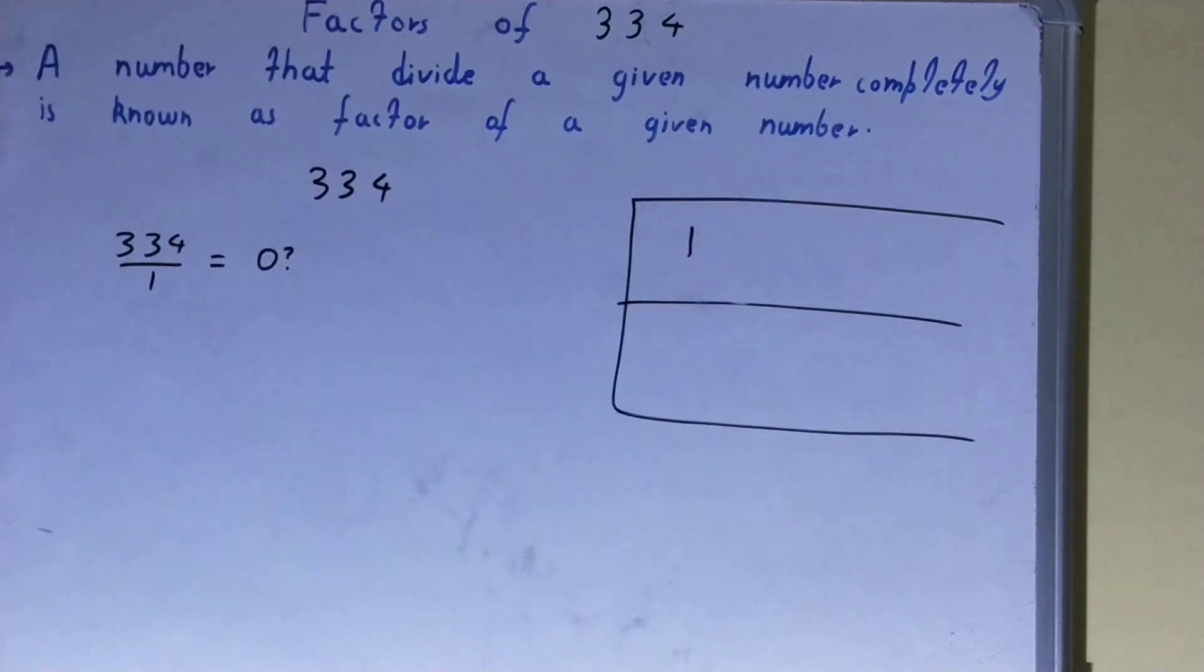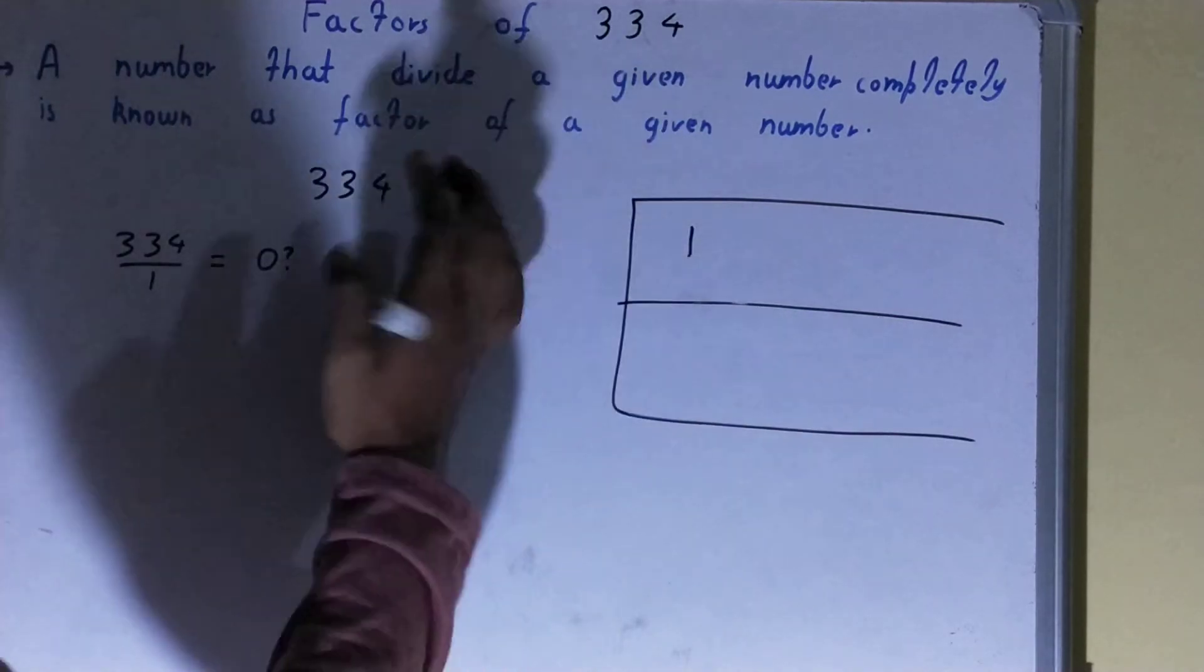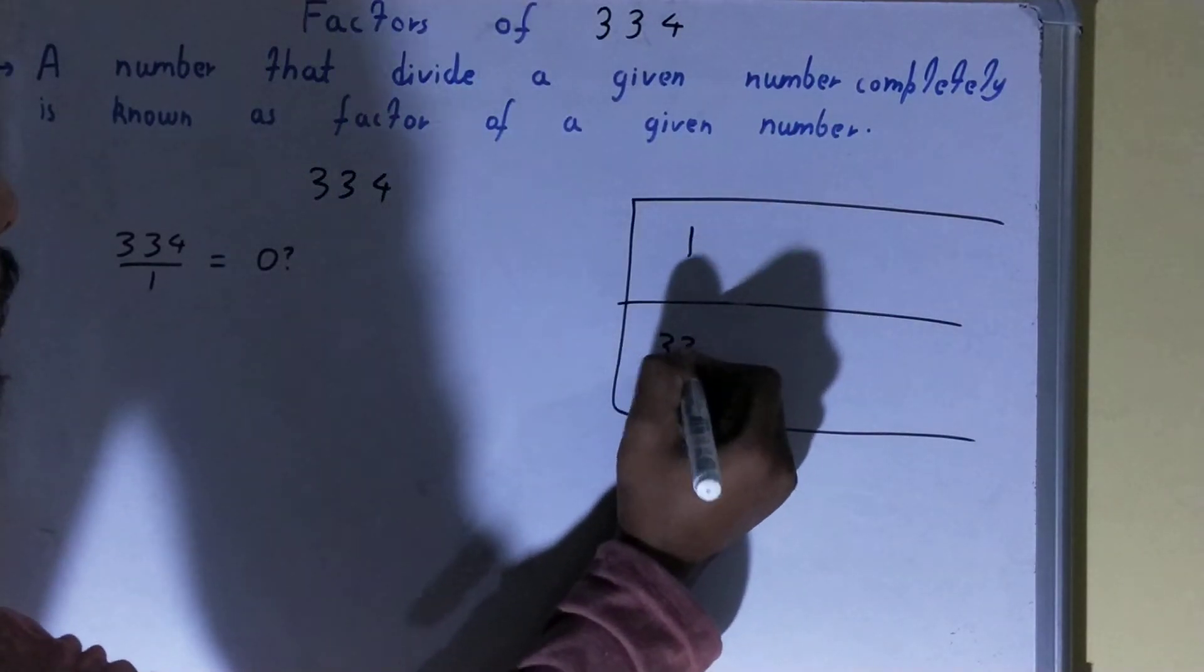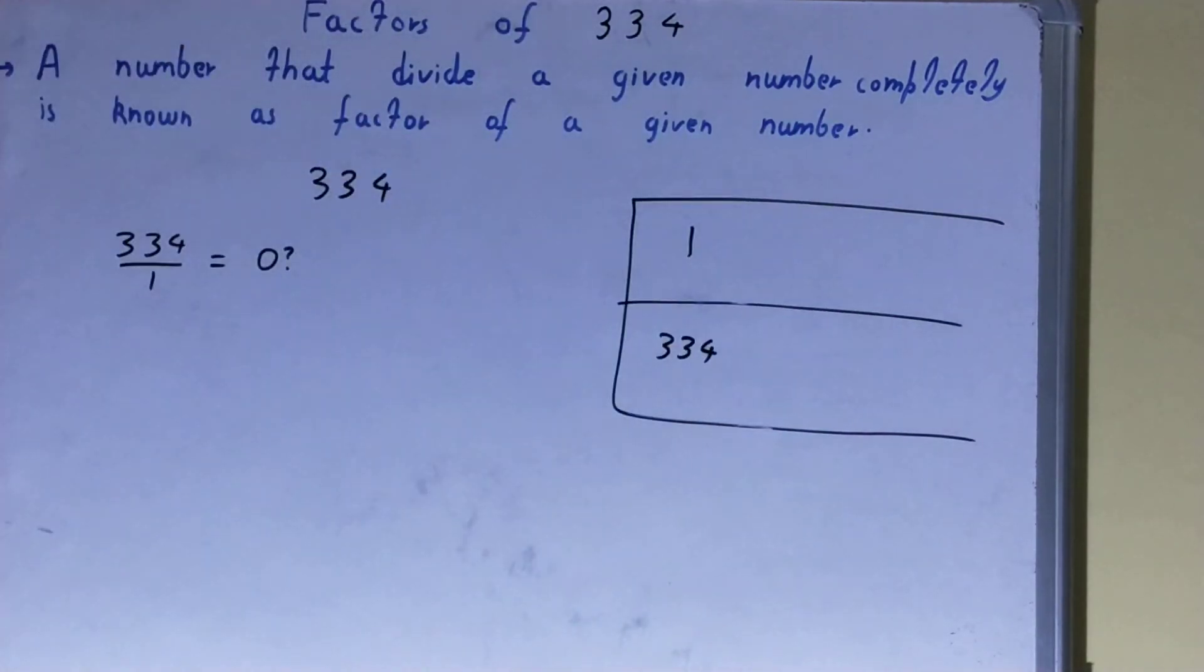So 1, we can write it over here in the factor list. And with the help of this 1, we can find out another factor. How? 1 into what times is 334? 1 into 334 times. So 334 will also be the factor.